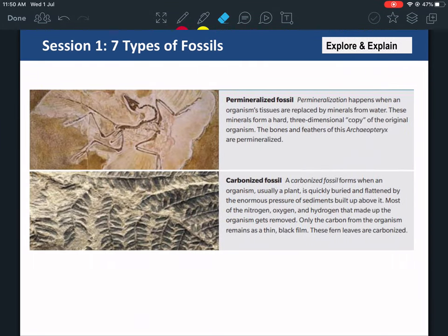We have seven types of fossils. The first type is the pre-mineralized fossil. It happens when an organism's tissues are replaced by minerals from water. These minerals form a hard, three-dimensional copy of the original organism. The bones and feathers are pre-mineralized, so the species becomes made of minerals that are in the water. You don't have to focus on that.